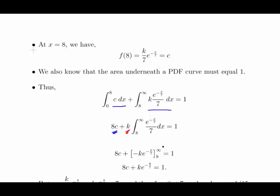We have to evaluate that between 8 and infinity. By convention, the exponential of minus infinity is 0, so we can disregard that part. When evaluated for 8, we get minus k times e to the minus 8 over 7. This equals k over 7 times e to the minus 8 over 7.